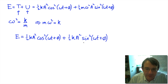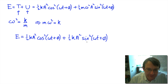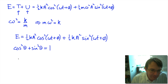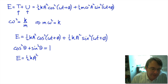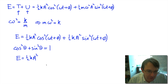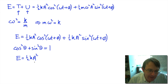Looking at this expression, we have ½ka² times (cos²(ωt + φ) + sin²(ωt + φ)). But cos²θ + sin²θ is a trigonometric identity — we know that cosine squared plus sine squared equals one. So the whole expression for the total energy simply reduces to E = ½ka². We've shown that the total energy in the oscillator is constant, which is exactly what we would expect from conservation of energy, and it's equal to the potential energy at maximum displacement from the equilibrium position.